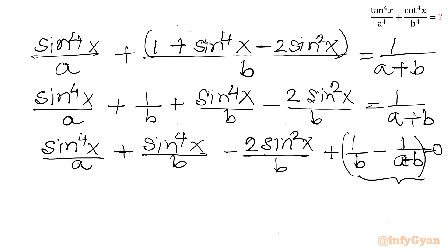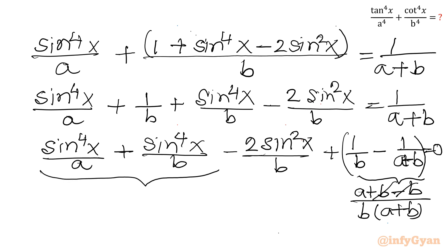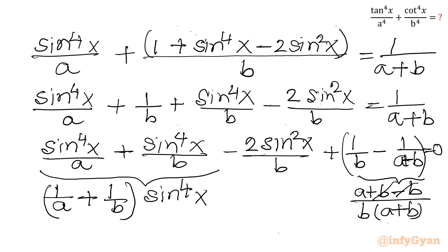Now simplifying the bracket 1/b − 1/(a+b): this gives (a+b−b) / [b(a+b)] = a / [b(a+b)]. Taking sin⁴x common from the first two terms gives (1/a + 1/b)·sin⁴x. So the equation becomes: (1/a + 1/b)·sin⁴x − 2sin²x / b + a / [b(a+b)] = 0.